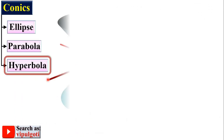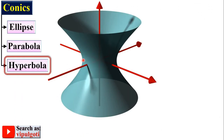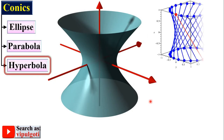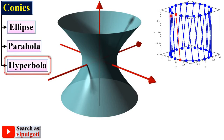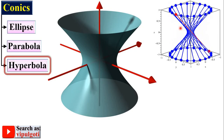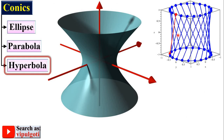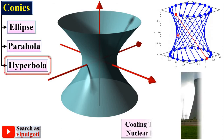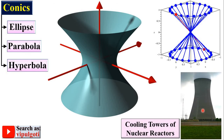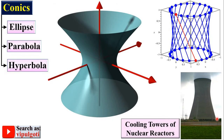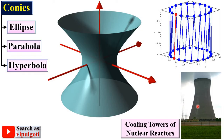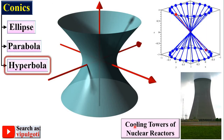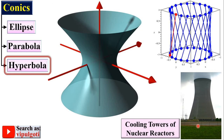Next is the hyperbola. Here you can see the shape of the hyperbola, and these are the different shapes of the hyperbola, which depend on the eccentricity. This shape is the hyperbola that is applied at the cooling towers of nuclear reactors or the cooling towers of thermal power plants.